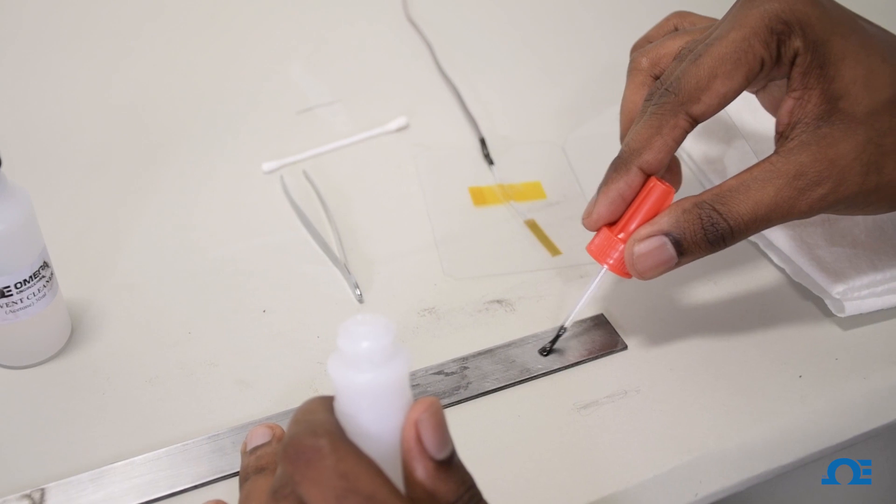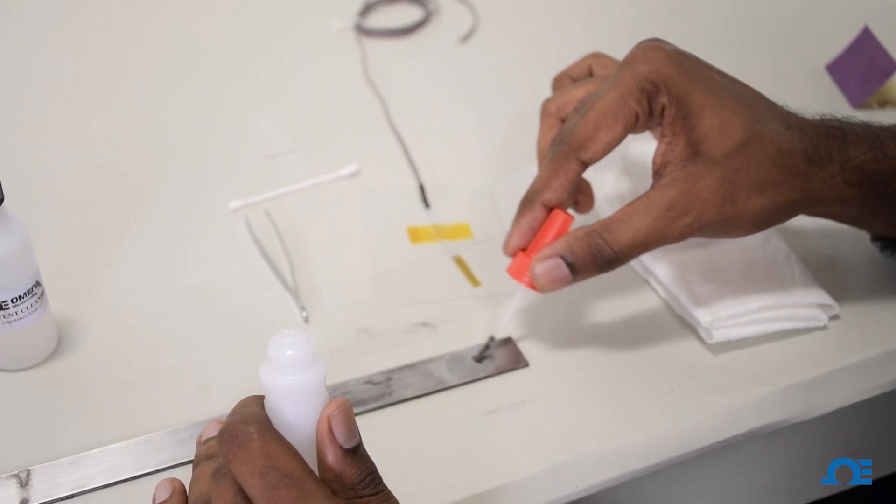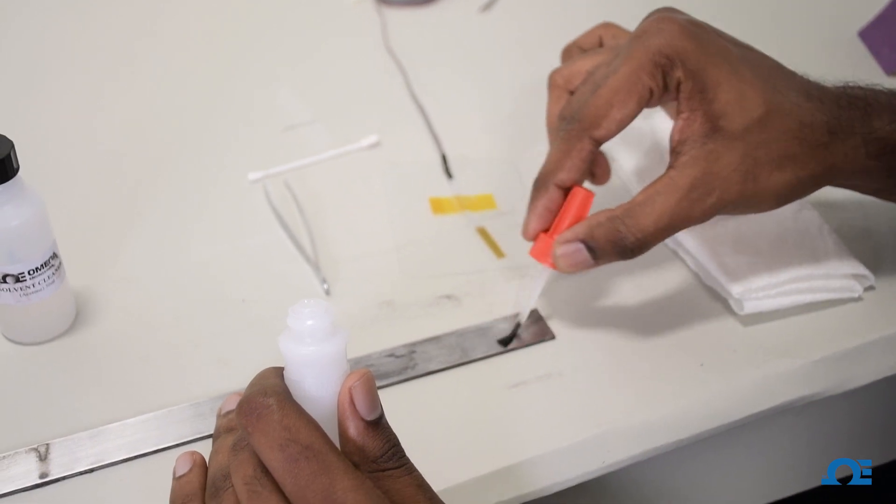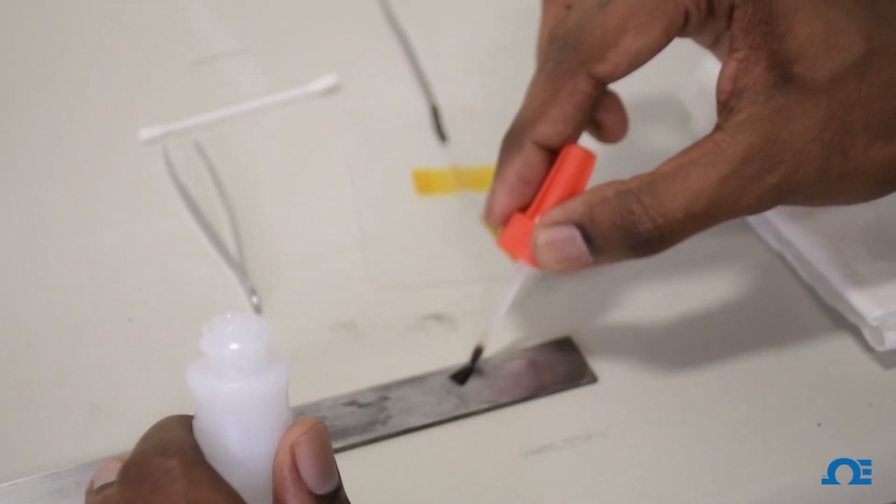And then apply a few drops of the SG496 adhesive, or you can use any cyanoacrylate based adhesive instant cure, on the surface where you want to apply the strain gauge. Apply a uniform coat.